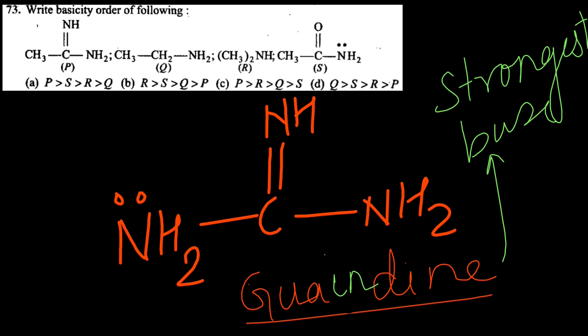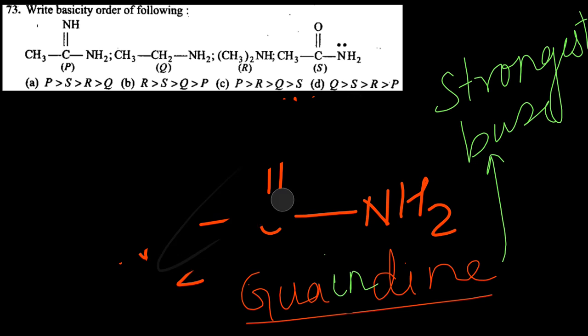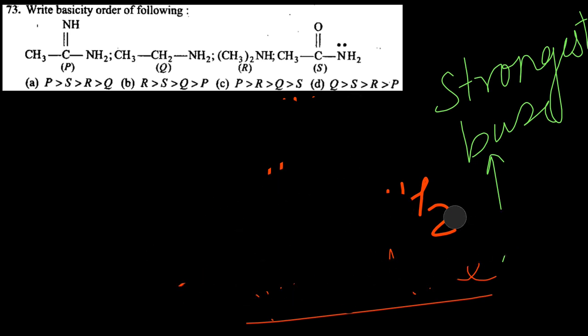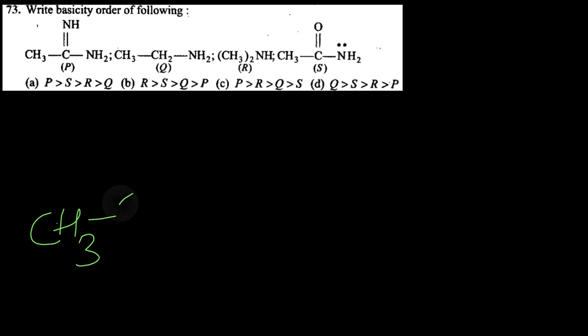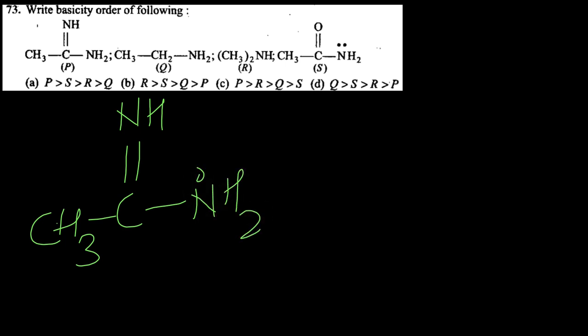Coming to our question: we have not been given guanidine directly, but a similar structure is given. That structure has CH3, C double bond, NH and NH2. So one side has NH and the other side has NH2, which increases the basic strength considerably. Delta minus comes on this nitrogen and delta plus on the other.